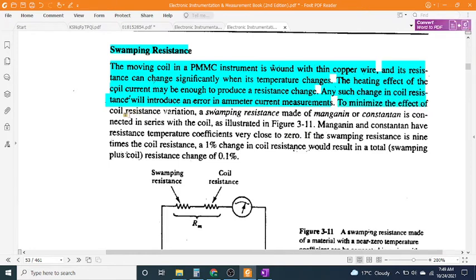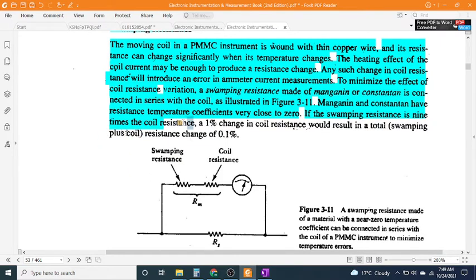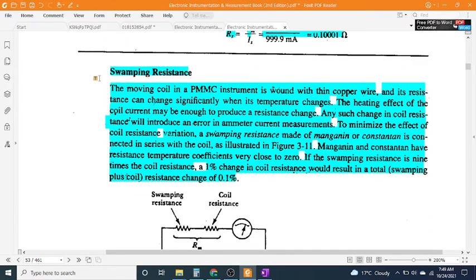To minimize the effect of coil resistance variation, a swamping resistance made of manganin or constantan is connected in series with the coil, as illustrated in Figure 3-11. Manganin and constantan have resistance temperature coefficients very close to zero. If the swamping resistance is 9 times the coil resistance, a 1% change in coil resistance would result in a total swamping plus coil resistance change of 0.1%.